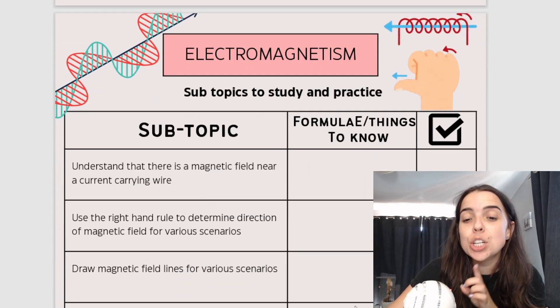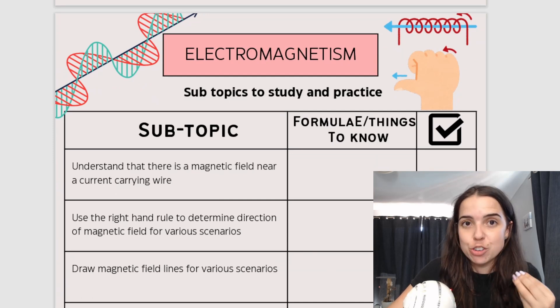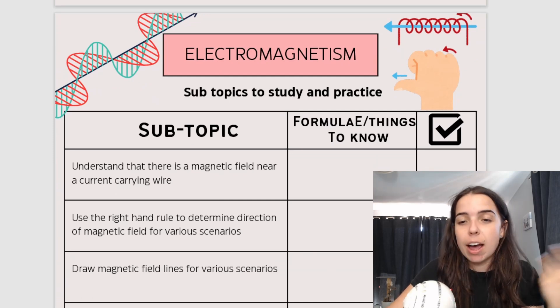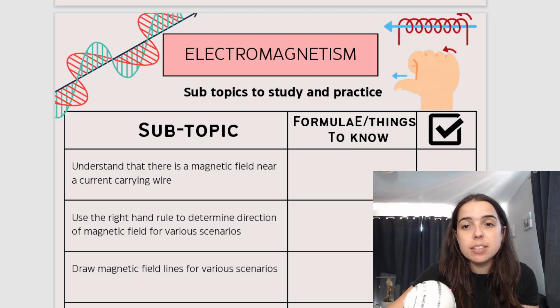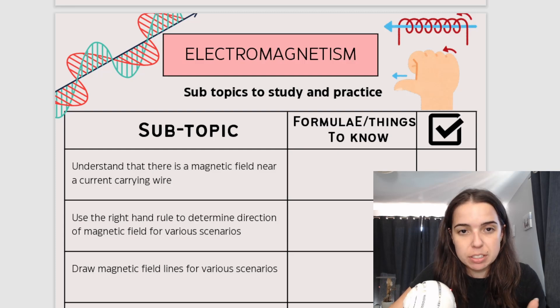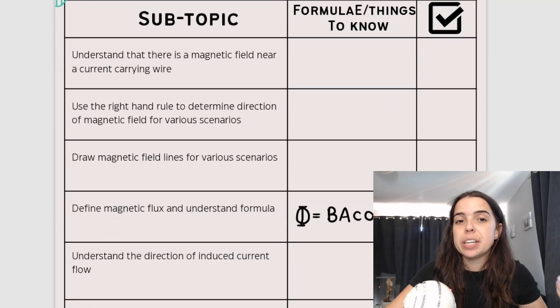So our first topic is called electromagnetism. Now as the topic name suggests, it's basically the crossover between electric fields and magnetic fields. This is very important. It leads on to an important topic in grade 12 that you need to know how to do. And basically the subtopics that you'll be covering are listed over here.